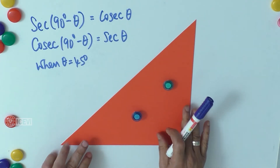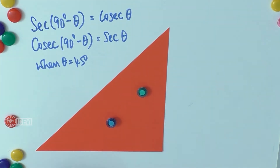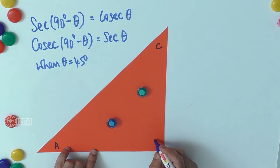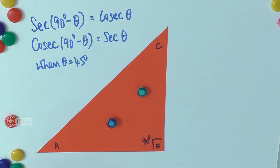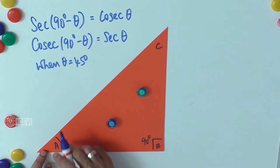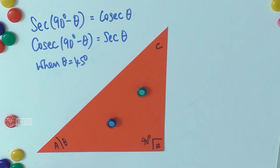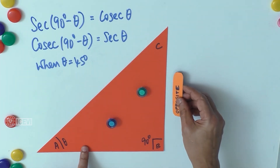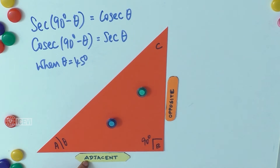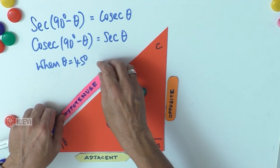Let us take a right angle triangle with three vertices A, B, and C, with 90 degrees at vertex B. We take 45 degrees as the reference angle, so angle A is theta, which is 45 degrees. When we take theta as the reference angle, then BC is the opposite side, AB is the adjacent side, and AC is the hypotenuse.